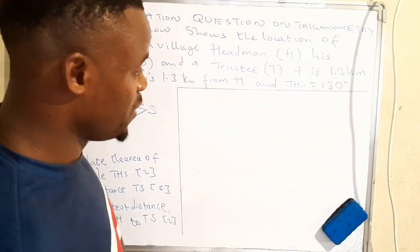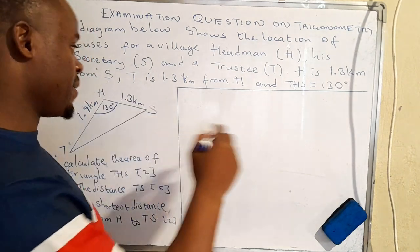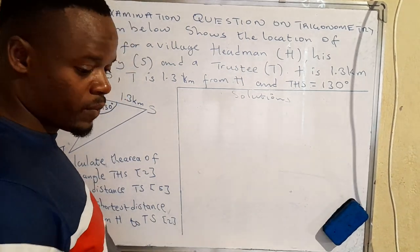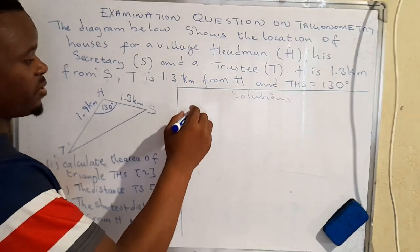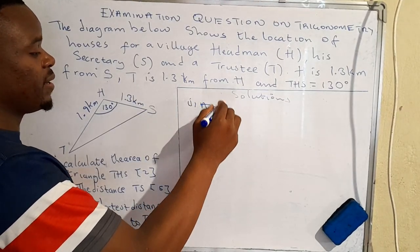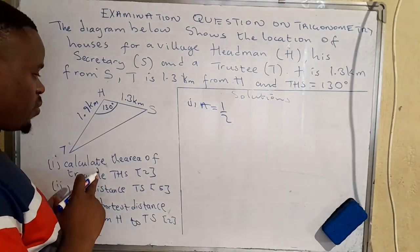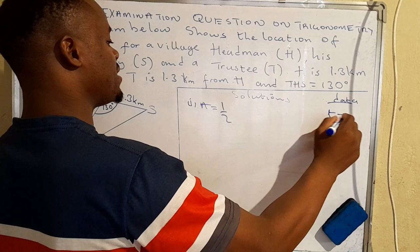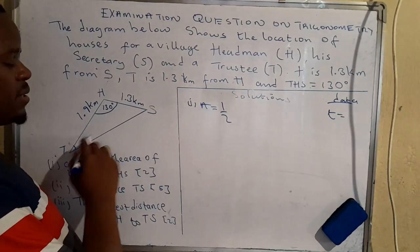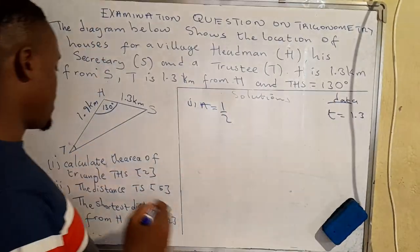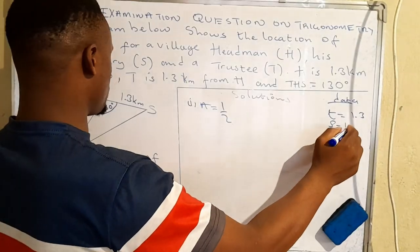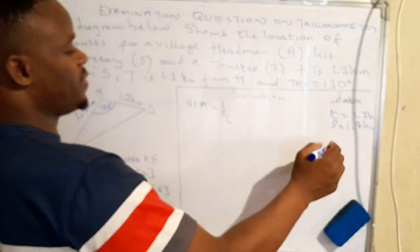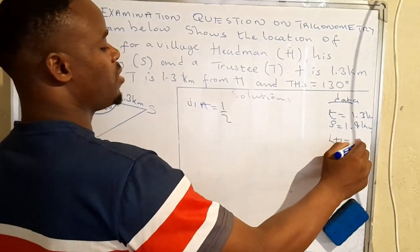In previous videos I demonstrated how you can find the area of a triangle. Now this is how you find the area. The formula is: area is given by half times two sides times the sine of the included angle. We've been given side t, which is 1.3 kilometers — that's the side opposite vertex T — and side s which is 1.9 kilometers, and angle H which is equal to 130 degrees.